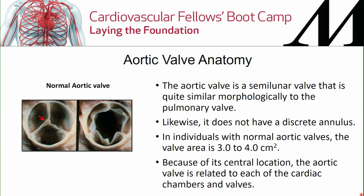The aortic valve is a tri-leaflet valve — though abnormal anatomy can include bi-leaflet, unicuspid, or even quadricuspid valves. It is considered a semilunar valve, similar to the pulmonic valve, with similar embryologic development. Normal valve area ranges between 2.5 to 3.5 centimeters squared — some texts say 3 to 4. It's important to know its anatomy because of its central location, touching all other chambers and valves.